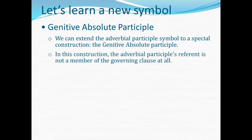In this construction, the adverbial participle's referent is not a member of the governing clause at all. A participle's referent is the word, concept, or person referred to within the passage that functions kind of like the participle's subject. If it's an action verb, the referent is the thing that does the action. Since the participle is a verbal adjective, it's also a word that modifies its referent — so there's an interesting bilateral relationship between the participle and its referent. In the genitive absolute, the special situation is that the participle's referent is not a member of the governing clause at all.